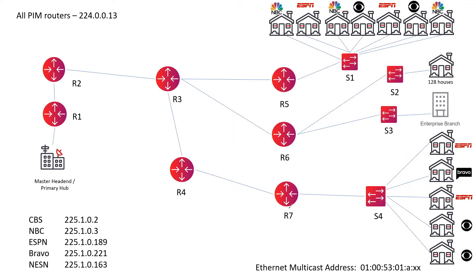In order to service multicast traffic where the root of the tree is the source, we have multicast routers, and these are PIM routers. PIM is Protocol Independent Multicast, meaning it rides over the IGPs and doesn't care which IGP it rides over. PIM routers are normally advertised using their loopback addresses, not their interface addresses, and they use the IGP to reach each other, the same way BGP does. So it doesn't matter what the underlying IGP is.